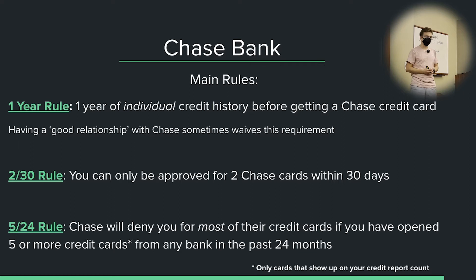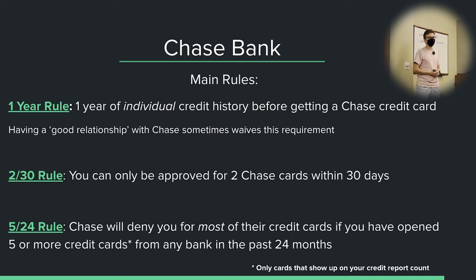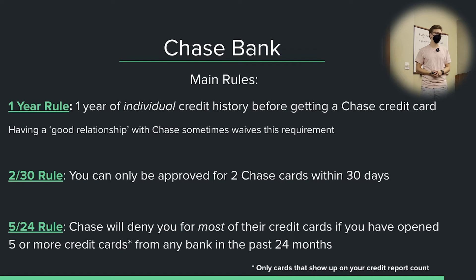Do authorized user cards count toward 5/24? The data shows that they do count authorized user cards toward 5/24. If including authorized user accounts you are beyond 5/24, you will be instantly denied. However, you can call the Chase reconsideration line and ask them to not count the authorized user cards because they're not yours, and they may choose to ignore them and potentially get you approved. It's a bit of a risky bet — they have for some people and for some people they haven't — but it is absolutely possible to be approved if the only thing bringing you past 5/24 is authorized user accounts.